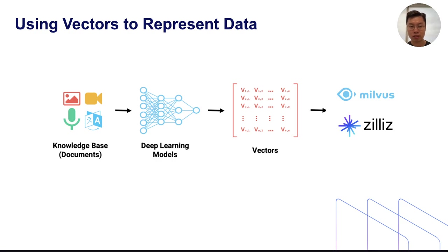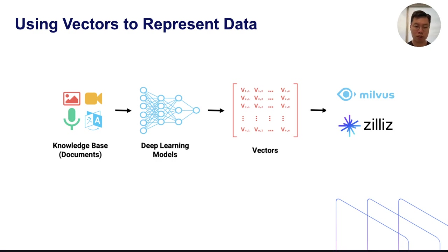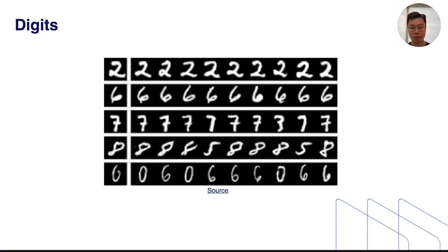One of the key paradigms here is taking a knowledge base — whether it be images, video, audio, text, natural language, or documents — and using deep learning models we perform inference on them and turn them into high-dimensional embeddings or tensors. We then store them in a vector database such as Milvus or Zilliz Cloud. To visualize how embeddings work: we're taking images — in particular, digits from the MNIST dataset — and generating fixed-length embeddings, say of size 128, for all of those images.